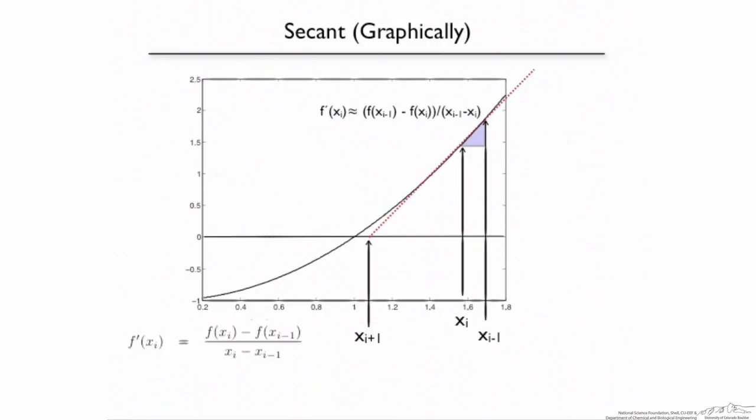We've got our approximation for the derivative. Then all we do is we take the Newton-Raphson formula, and we plug the first equation into the second equation. Do a little bit of algebra, and now we have a formula for xi plus 1. It's the same xi plus 1 that's depicted graphically on that screen. It's in terms of things we know, xi, xi minus 1, f of xi, f of xi minus 1. So there we go, and then we just repeat that procedure.